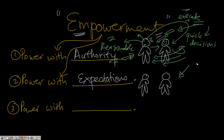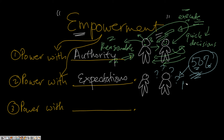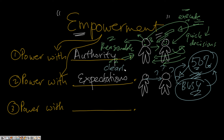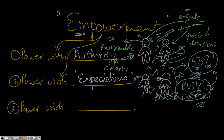Secondly, empowerment is about power with clear expectations. According to Gallup, 50% of workers in the U.S. come to work not knowing clearly what is expected of them. Many employees are very busy but unsure whether their activities are aligned with the boss's expectations. To empower someone, you must communicate clearly what is expected, because unclear expectations are the number one killer of relationships — leading to conflict, anger, and disempowerment.